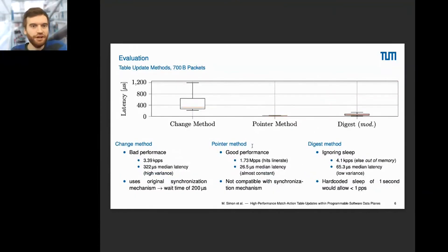Let's now compare our two methods and for comparison the original digest method. The change method has rather bad performance, only allowing 3,400 packets per second and having a high median latency with high variance around 322 microseconds. This is caused by the introduced wait time because it relies on the underlying synchronization mechanism. Using the pointer itself leads to rather good performance. We can hit line rate and also have a relatively small median latency of only 26.5 microseconds. The latency is constant and we can see there's not much performance overhead in comparison to just reading.